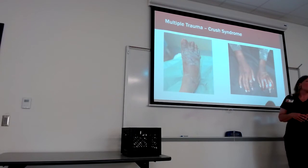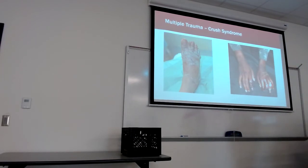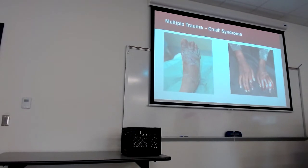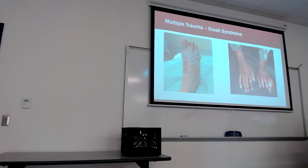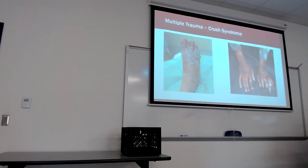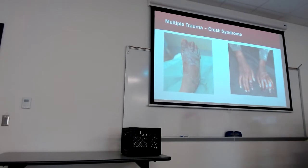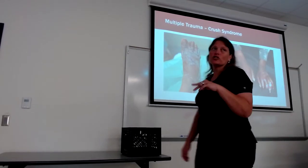Myoglobin is a large molecule that causes acute tubular necrosis, which leads to acute renal failure, which leads to chronic renal failure if not corrected — the same process we discussed with electrical burns. So with crush injuries, we're talking about perfusion at the site or distally, and we're talking about the renal function of the patient.